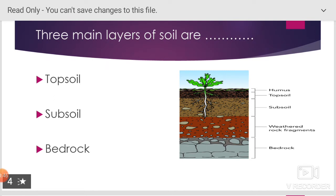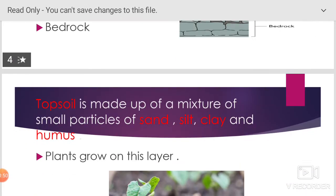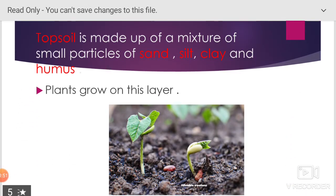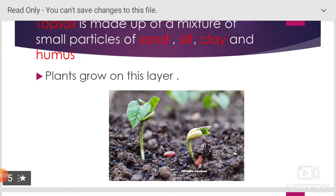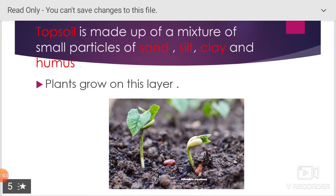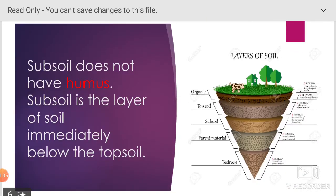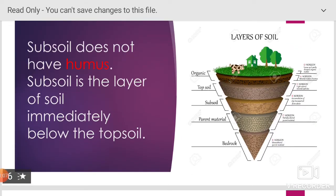Three main layers of soil are topsoil, subsoil, and bedrock. Topsoil is made up of a mixture of small particles of sand, silt, clay, and humus. Plants grow on this layer. Subsoil does not have humus. Subsoil is the layer of soil immediately below the topsoil.